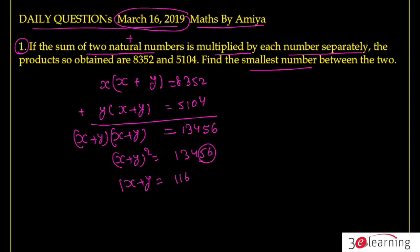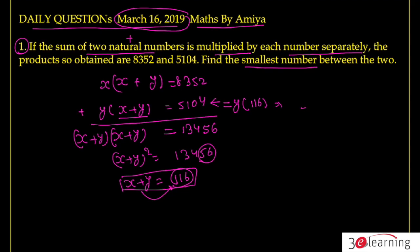To find the smallest number, we work with the smallest product. With x + y = 116, the required smallest number is 5104 divided by 116, and the answer is 44.